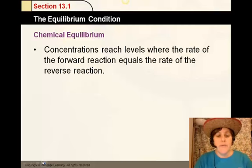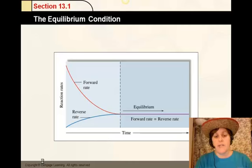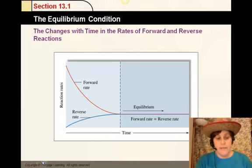The concentrations reach levels where the rate of the forward reaction equals the rate of the reverse reaction, and that is what equilibrium is. It doesn't necessarily mean the concentrations are equal. It means the rate is equal. And therefore, the ratio between the reactants and products remain the same. And here's a graph showing that.